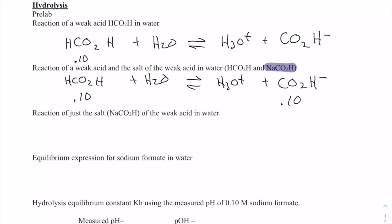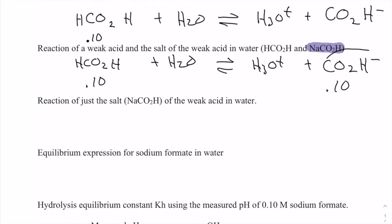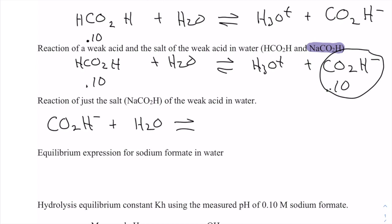In this experiment we're only going to start with the salt, which is the conjugate base, also known as the common anion. So if we start with sodium formate, the sodium is a spectator ion, but because formate is the anion of a weak acid, it will react with water a little bit and take a hydrogen from the water, forming the weak acid formic acid plus hydroxide ions.